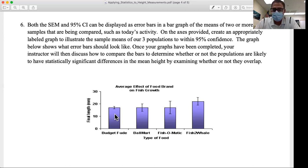Why is it statistically significantly different? Because I'm 95% confident the mean final length for budget food falls in this range.